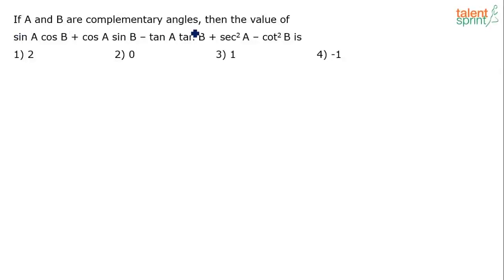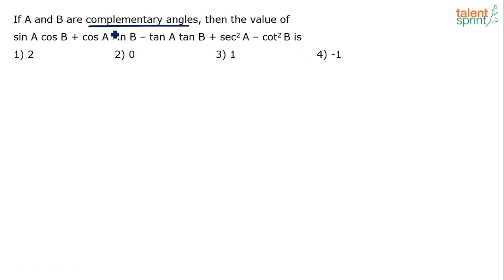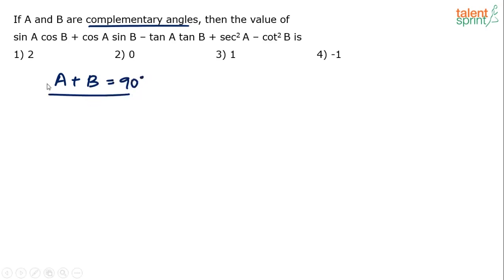If A and B are complementary angles, then find the value of sinA·cosB + cosA·sinB - tanA·tanB + sec²A - cot²B. The options are -2, 0, 1, or -1. Complementary angles means A plus B equals 90 degrees — that is the only condition given in the question.